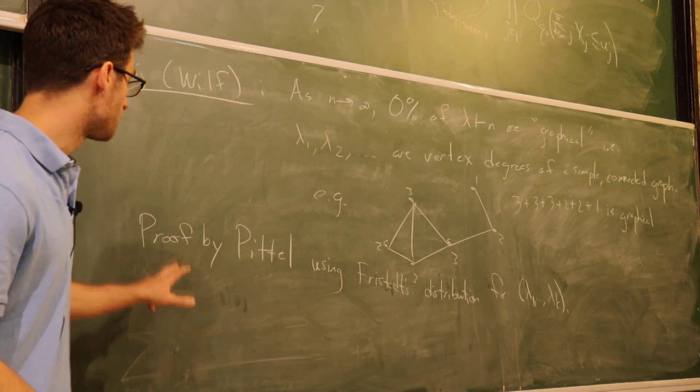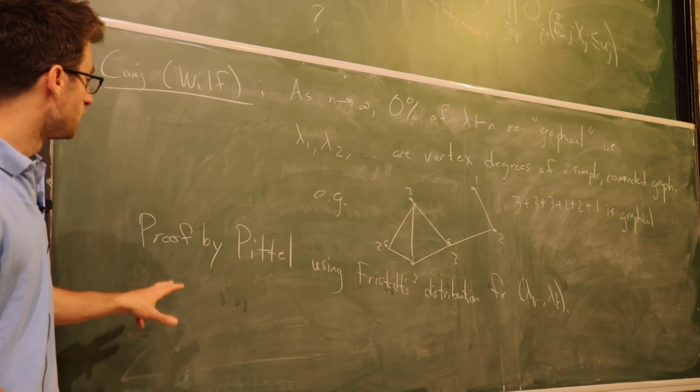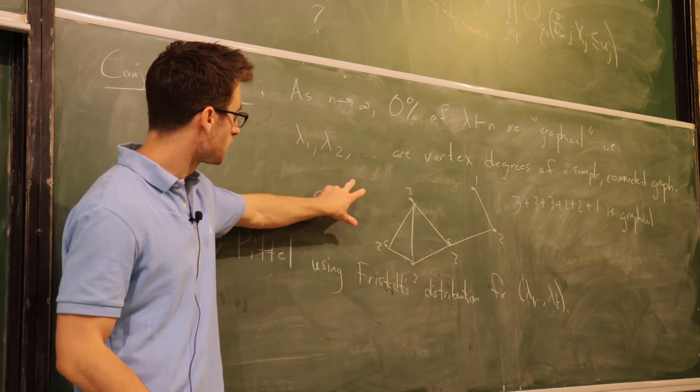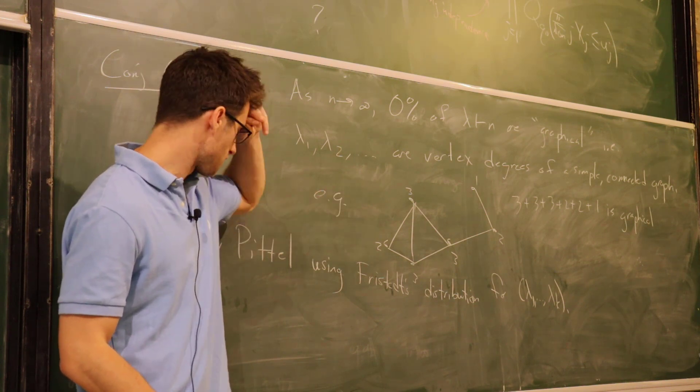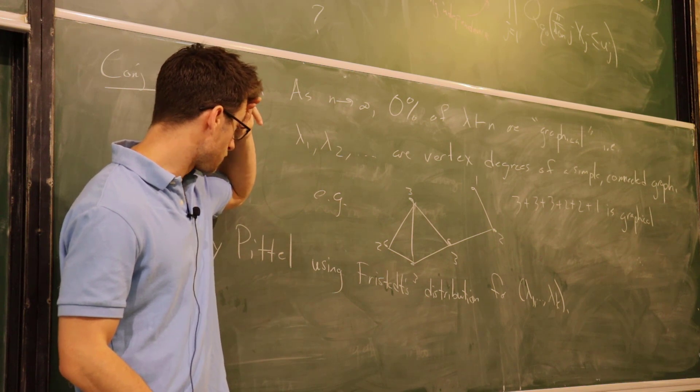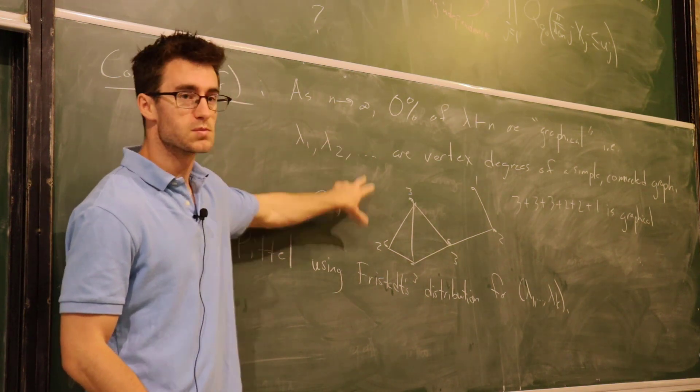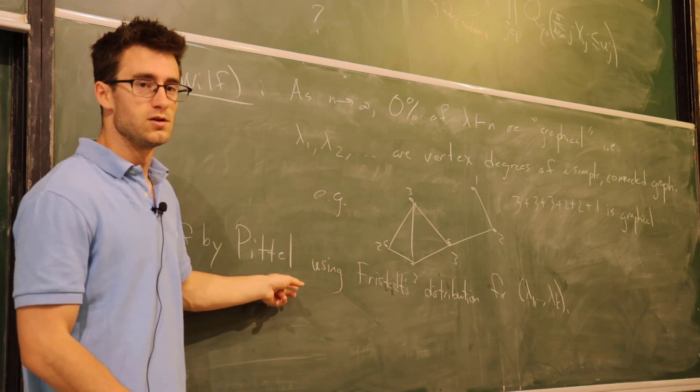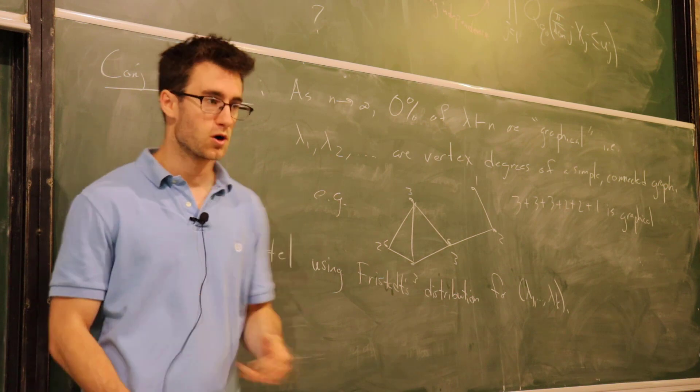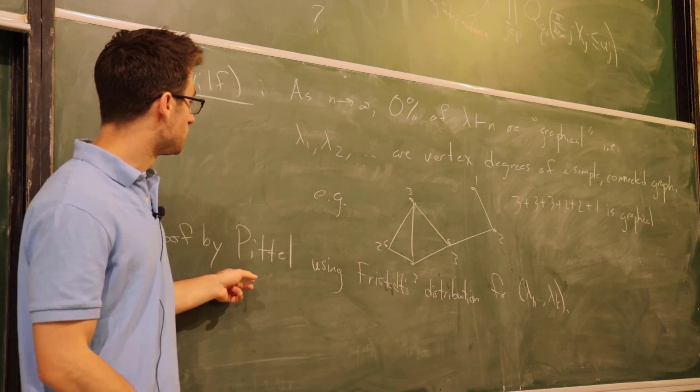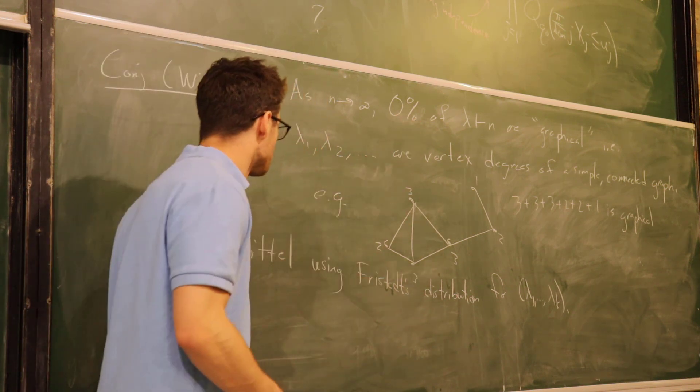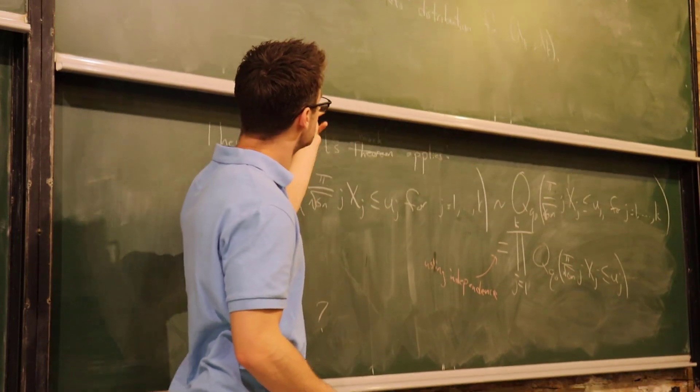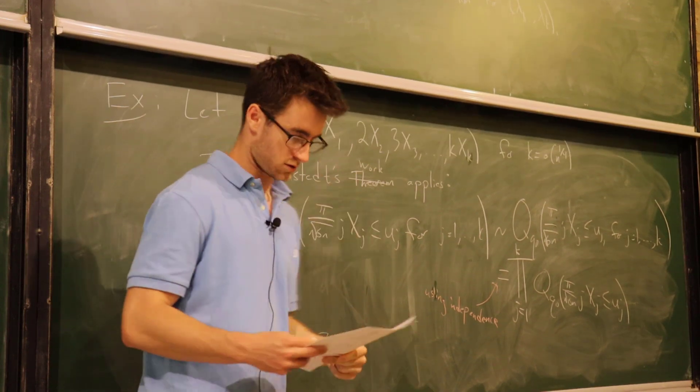But for a large n, 0% of these are going to be graphical. This is proved by Pittel using Fristedt's distribution for the largest part. I'm not going to indicate how that's done, but there was a lot of incremental progress on this. I think Erdős and another author's name I'm forgetting translated this problem into certain conditions on the partition. Then Pittel showed that because of this distribution on the largest part, this percentage here has to go to zero.